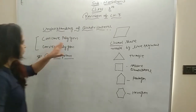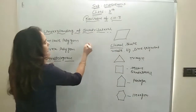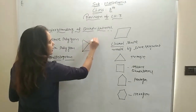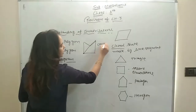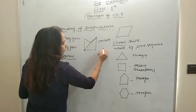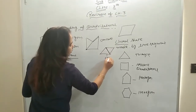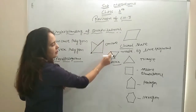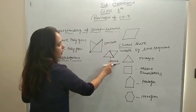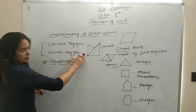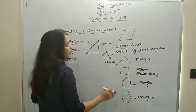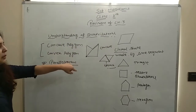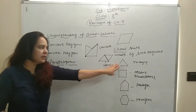So what is the difference between concave polygon and convex polygon? In a concave polygon, the diagonals meet outside the figure. In a convex polygon, the diagonals meet inside. On the other side, if the sides are equal, then it is a regular polygon. If the sides are unequal, then it is an irregular polygon. Mainly in this chapter, we have to understand how to find the sum of the interior angles.